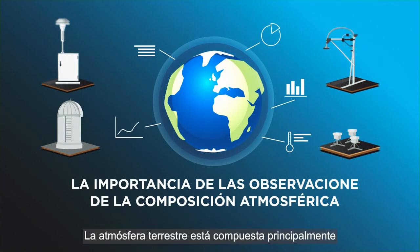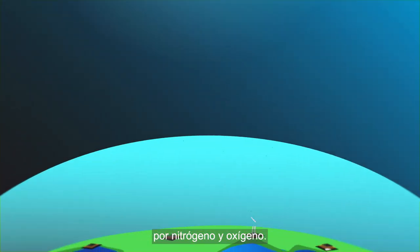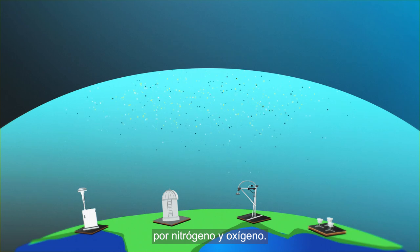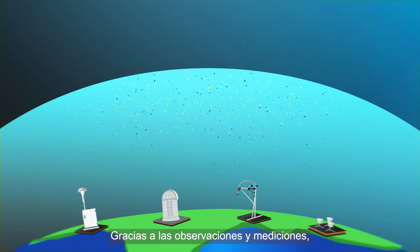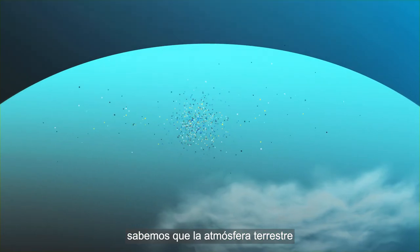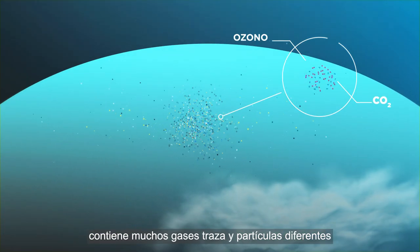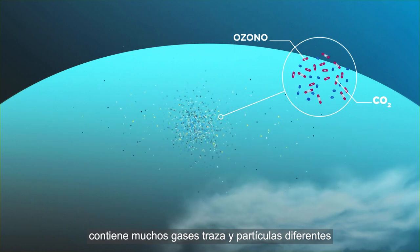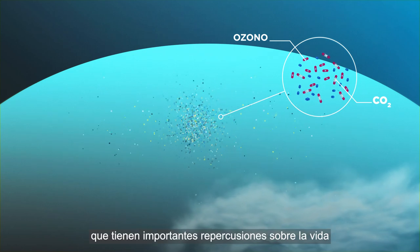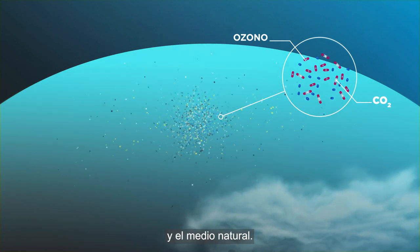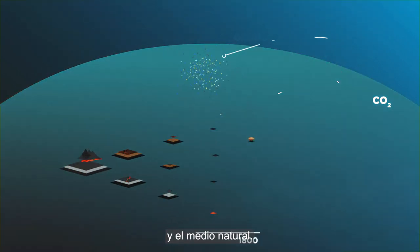Earth's atmosphere is mainly composed of nitrogen and oxygen. We know from observation and measurement that Earth's atmosphere contains many different trace gases and particles that have substantial impacts on life and the natural environment.